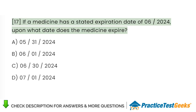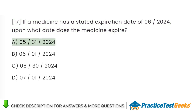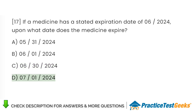If a medicine has a stated expiration date of 06/2024, upon what date does the medicine expire? A. 05/31/2024. B. 06/01/2024. C. 06/30/2024. D. 07/01/2024.